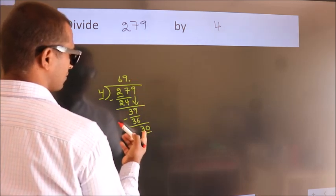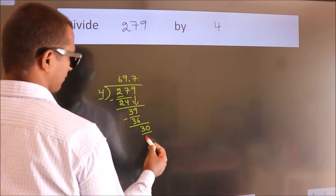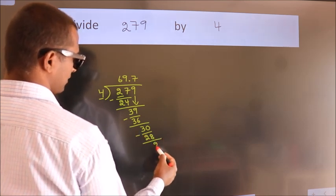A number close to 30 in the 4 table is 4 times 7, which is 28. Now we subtract. We get 2.